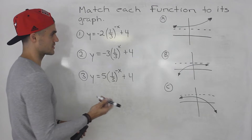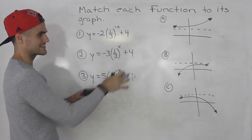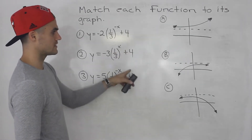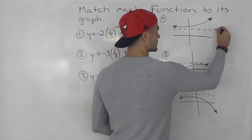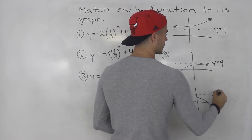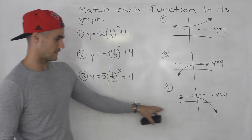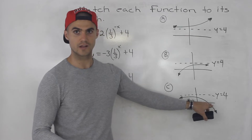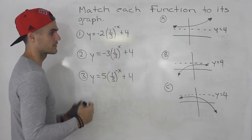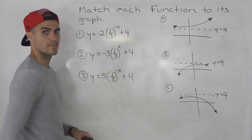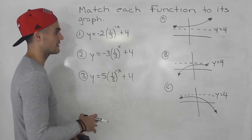Unfortunately all of the horizontal asymptotes are 4. Notice the c value is 4 for all of these, so y equals 4 for all three. If one of these functions had a c value of negative 1 and one of the graphs had a horizontal asymptote of negative 1, you'd know right away they match. But in this case all of them have a horizontal asymptote of 4, so there's no way to tell using that criteria.